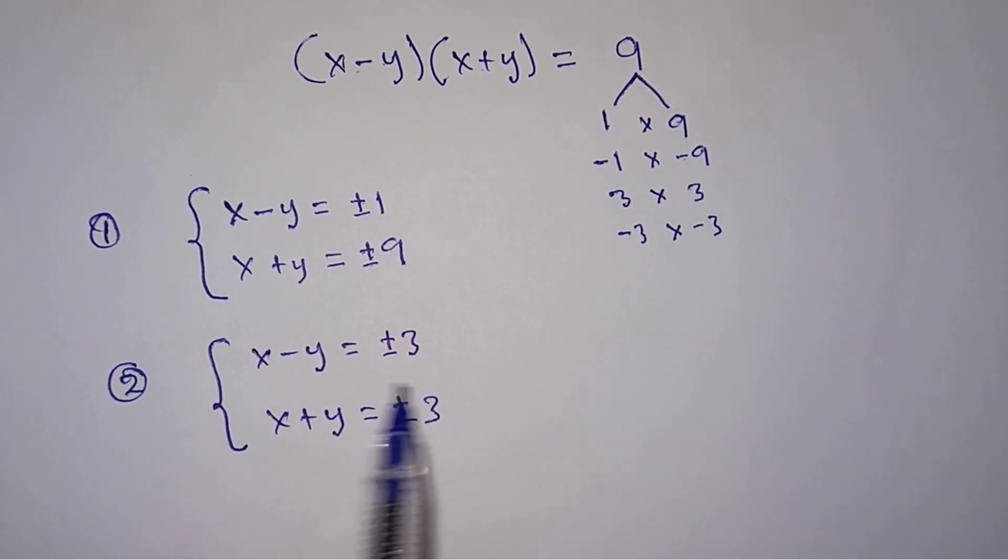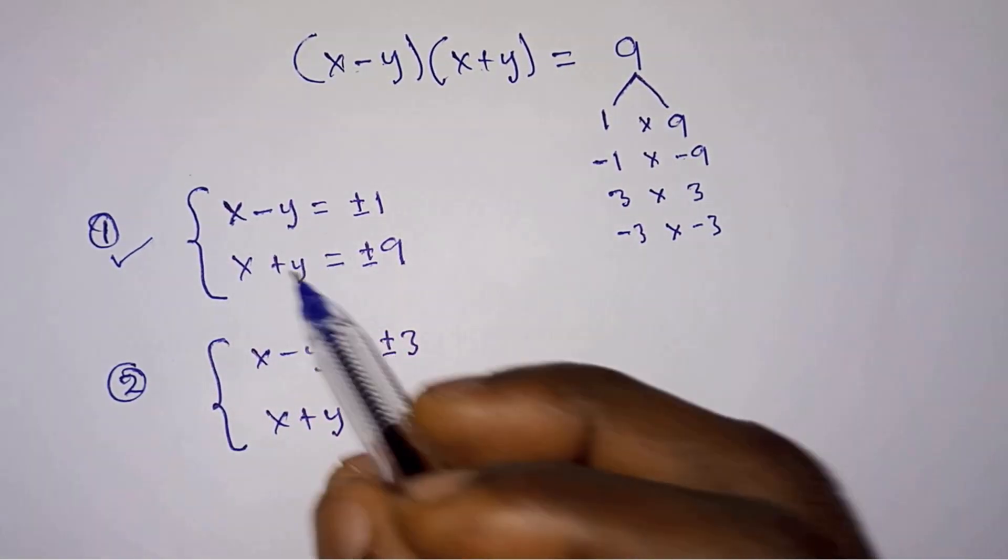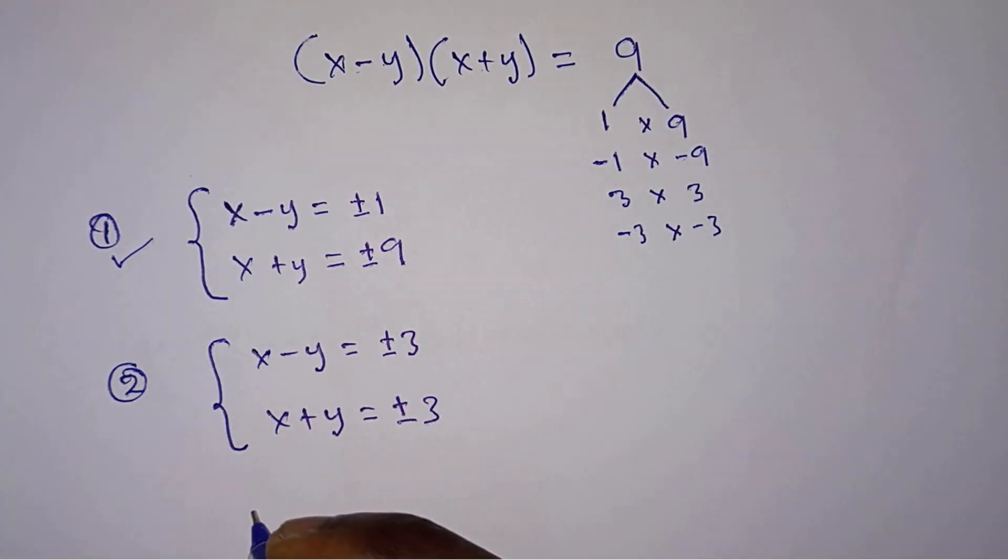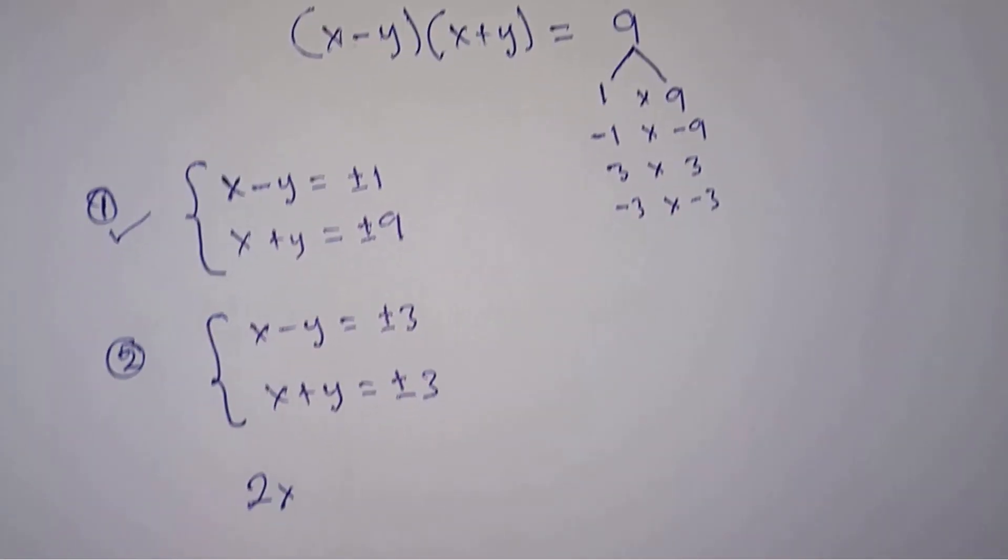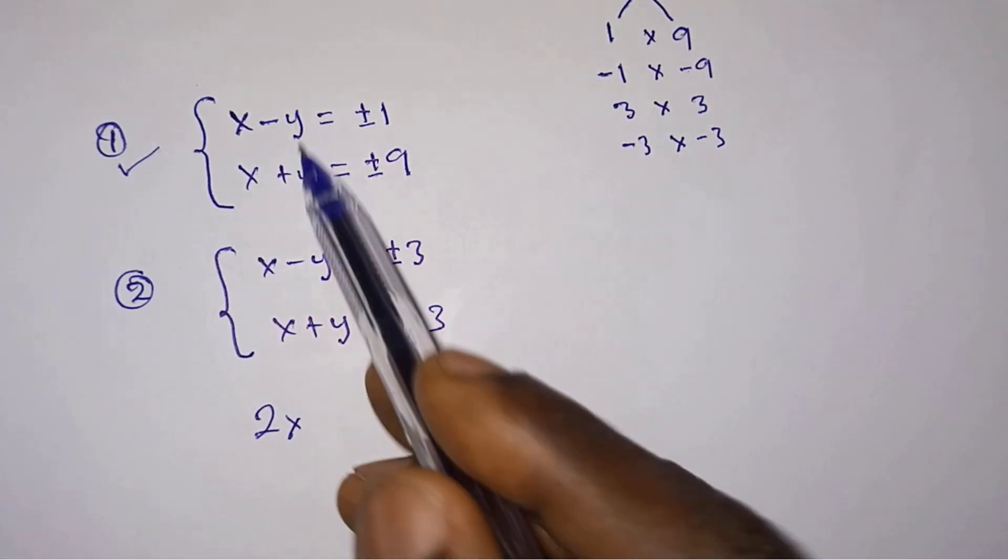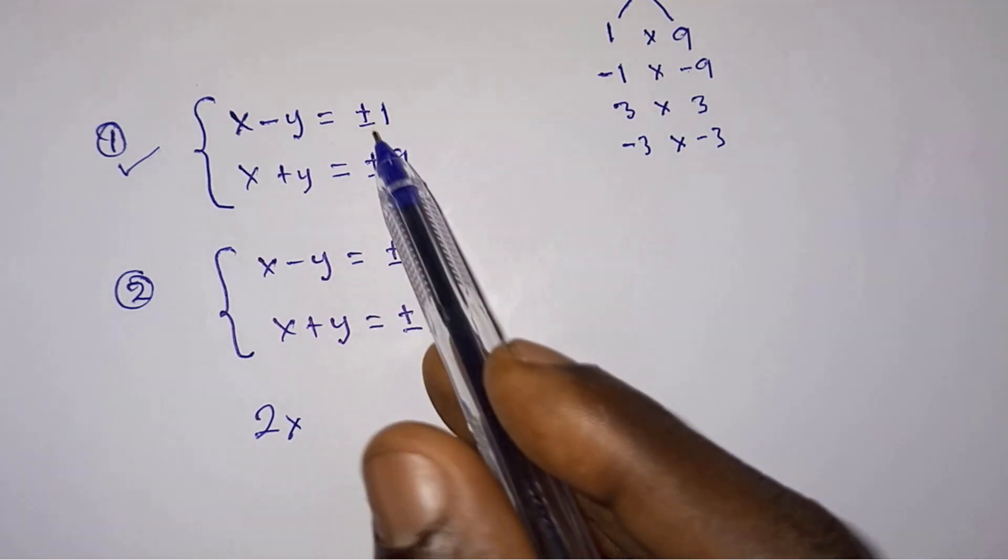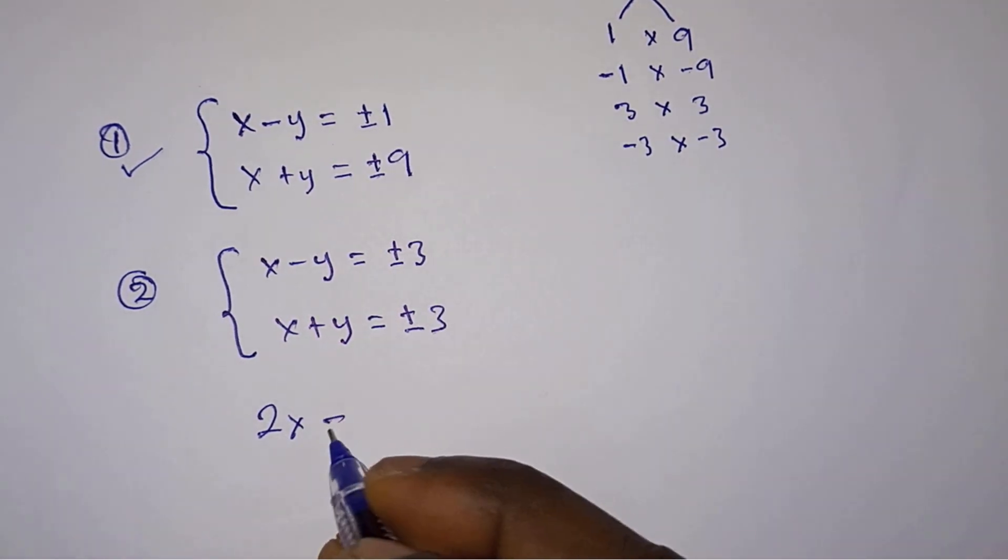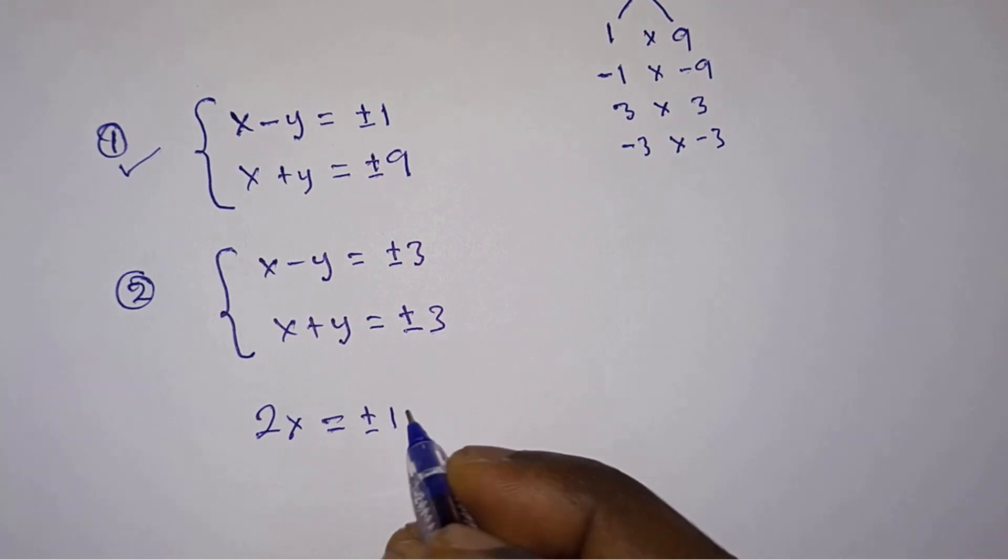So we will solve these equations. Let's consider the first one. Let's add the two equations. So you have x plus x which is 2x, then negative y plus y cancel out. So here we have the right hand side to be plus or minus 10.